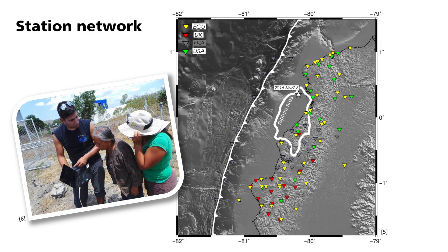Later, at the end of May, the ocean bottom seismometers, or OBSs, shown here in blue, were installed by the French team, and finally we got this beautiful array to record the entire aftershock sequence. This was only possible with the collaboration of many countries and institutions.